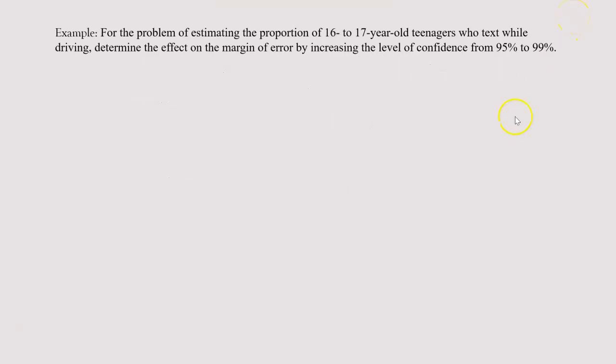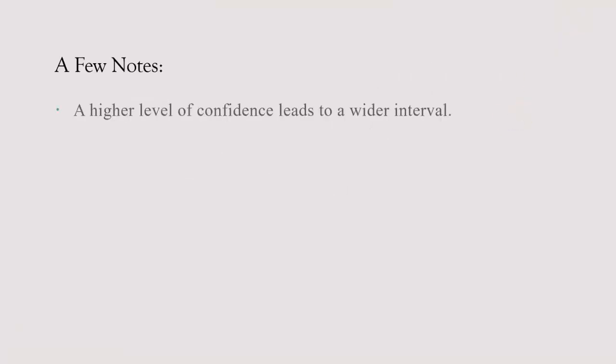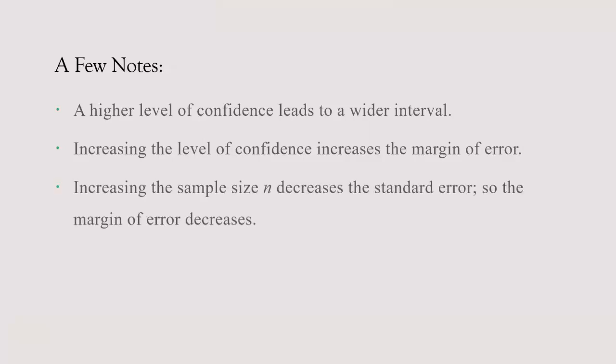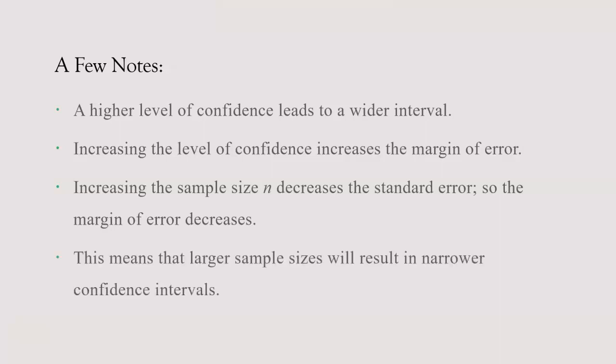There are a few takeaways from this. First, a higher level of confidence leads to a wider interval — going from 95% to 99% confidence widened the interval because the margin of error increased. Second, increasing the sample size decreases the standard error, which decreases the margin of error. So as the sample size gets bigger, your confidence interval gets smaller — larger sample sizes result in narrower confidence intervals. This is how you construct confidence intervals for a population proportion.